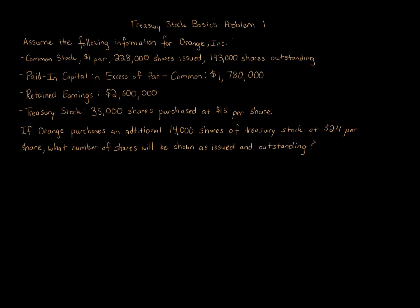Treasury Stock Basics Problem 1. Assume the following information for Orange Inc: Common stock $1 par, 228,000 shares issued, 193,000 shares outstanding, Paid-In Capital in Excess of Par - Common $1,780,000, Retained Earnings $2,600,000, Treasury Stock 35,000 shares purchased at $15 per share. If Orange purchases an additional 14,000 shares of treasury stock at $24 per share, what number of shares will be shown as issued and outstanding?